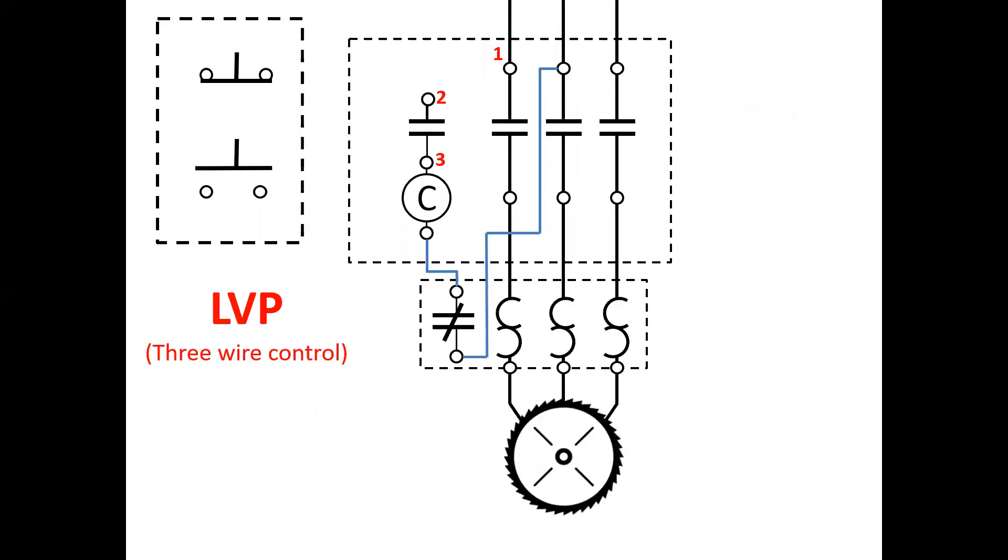So low voltage protection uses the term three-wire control because of the number of control conductors required to connect the field devices back to the motor starter. NEMA one connects to our stop push button. The stop push button connects to the start push button. The start push button connects back to NEMA three as well as NEMA two.